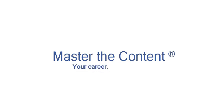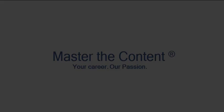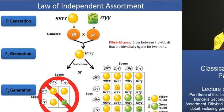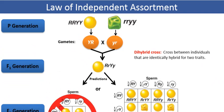Your career, our passion. A dihybrid cross is a cross that involves two pure lines, or two true-breeding varieties — two pure-breeding pea plant varieties in this case.